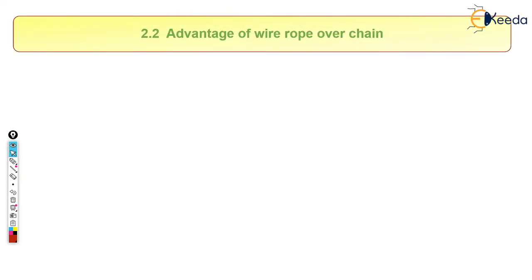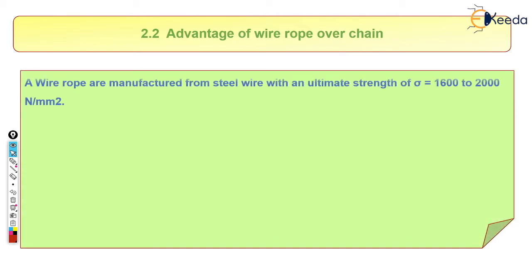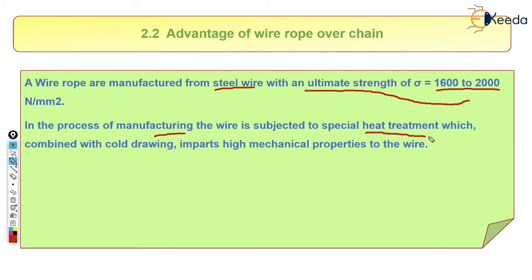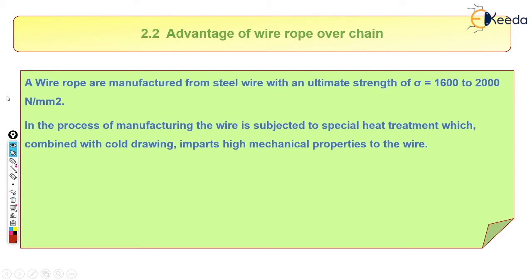The wire rope also has greater reliability compared to chain. That is why in hoisting mechanisms we use wire rope instead of a simple chain. These wire ropes are manufactured from steel wires and have an ultimate strength from 1600 to 2000 Newton per mm². In the manufacturing process, the wire is subjected to special heat treatment combined with cold drawing, giving it high mechanical properties.